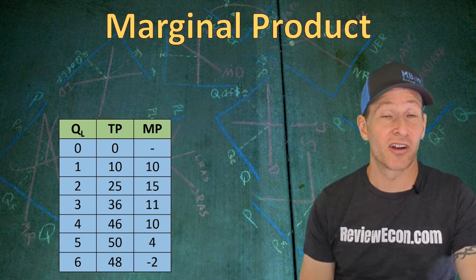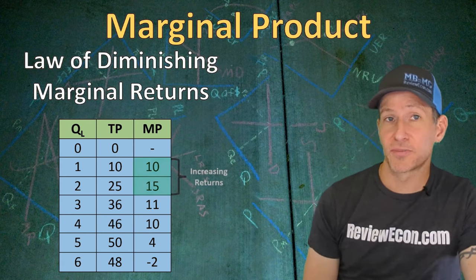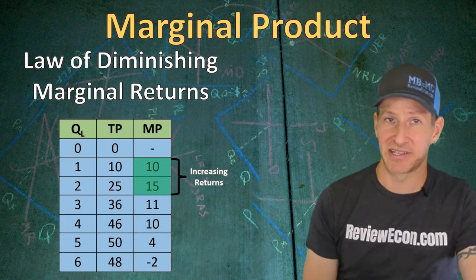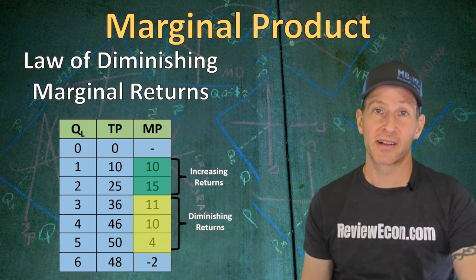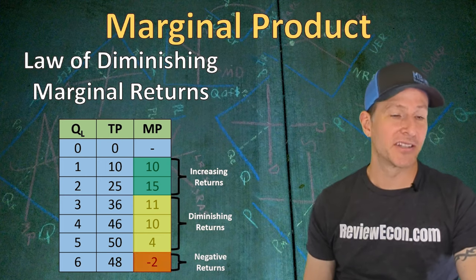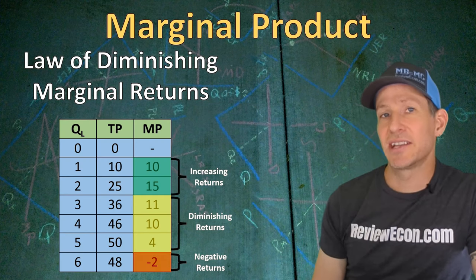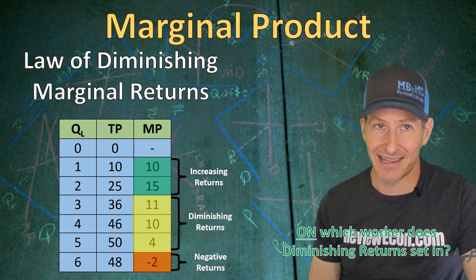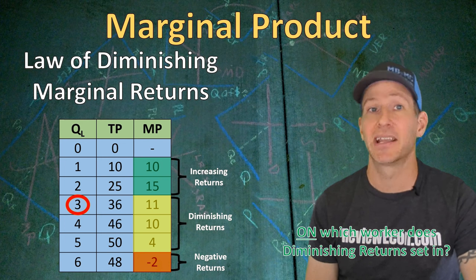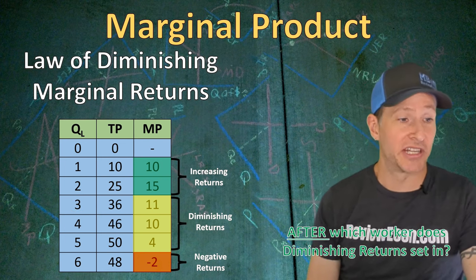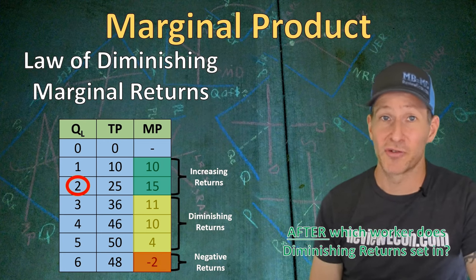Now that we have a marginal product column, we can more easily see the three phases predicted by the law of diminishing marginal returns. When marginal product is increasing, total product was increasing at an increasing rate — that's increasing returns. Then marginal product begins to decrease but is still positive, meaning total product is increasing at a decreasing rate. Finally, marginal product goes negative and total product decreases — that's negative returns. On your exam, you could be asked on which worker diminishing returns sets in. The answer here is the third worker, because that's when marginal product first decreases. If asked after which worker diminishing returns sets in, the answer is the second worker. Read these questions carefully.